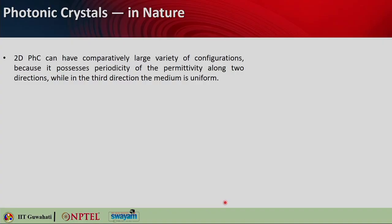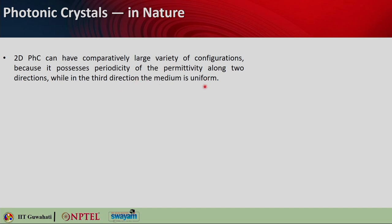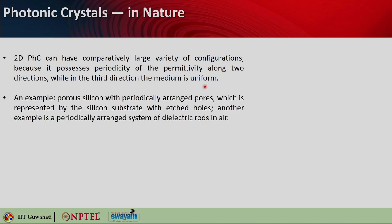When you take a 2D photonic crystal, it can have a comparatively large variety of configurations. In 1D photonic crystals, it is simply high, low, high, low — varying the refractive index. The Bragg gratings you have seen are examples of 1D photonic crystals; you can also take a solid slab and drill holes in a linear fashion. But in 2D photonic crystals, there is comparatively larger variety because it possesses periodicity of the permittivity along two dimensions — you have more room to play — while the third dimension (depth) is maintained uniform with no refractive index variation.